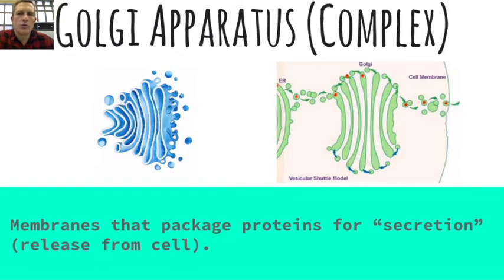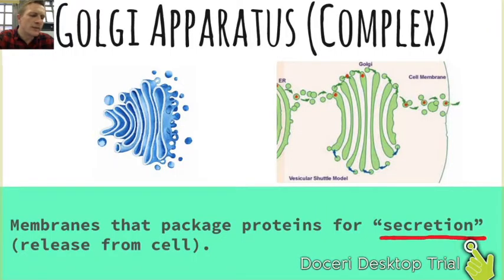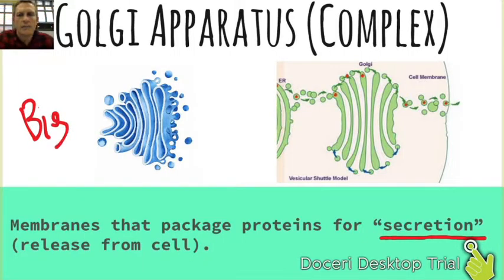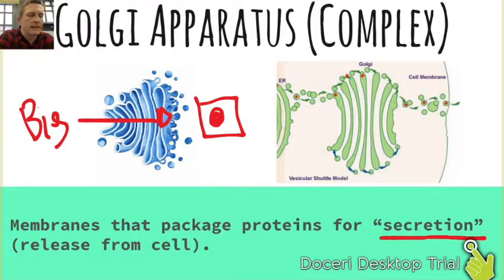The Golgi apparatus, or Golgi complex, is the structure in the cell that looks a little like the endoplasmic reticulum but is usually found closer to the cell membrane. It packages proteins for secretion — meaning to be released from the cell. A big complex protein is hard to get outside the cell membrane, so it makes its way through the Golgi apparatus and comes out in a form that can be released through the cell membrane. Essentially, the Golgi apparatus puts the protein in a little box and sends it out of the cell for shipment.